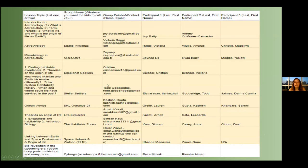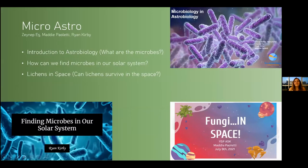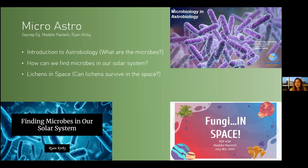Here I put a table for our groups. You can see my group — Microbiology and Astrobiology was our topic, and our group name was Microastro. My teammates were Ryan and Maddie. We talked about astro-microbiology. I was the first talker in that lesson, and I made an introduction to astrobiology and astro-microbiology: what are microbes, what kinds of microbes do we know, and which of them have been used in space experiments. Then Ryan talked about how we can find microbes in our solar system, and Maddie got more specific and talked about lichens in space — can lichens survive in space?